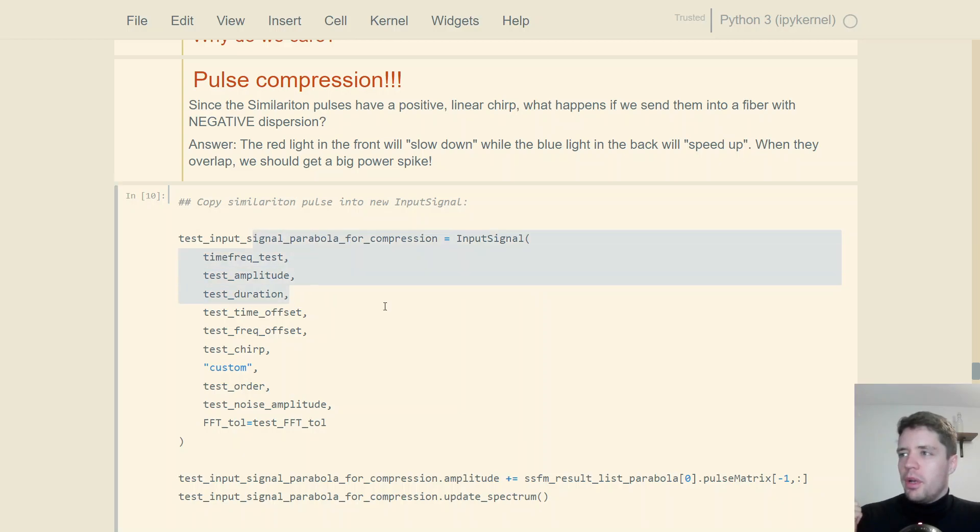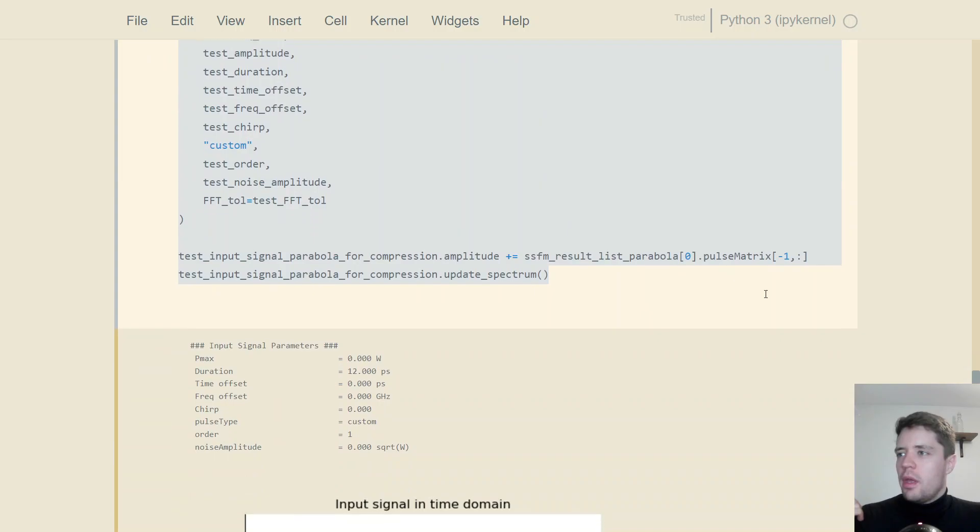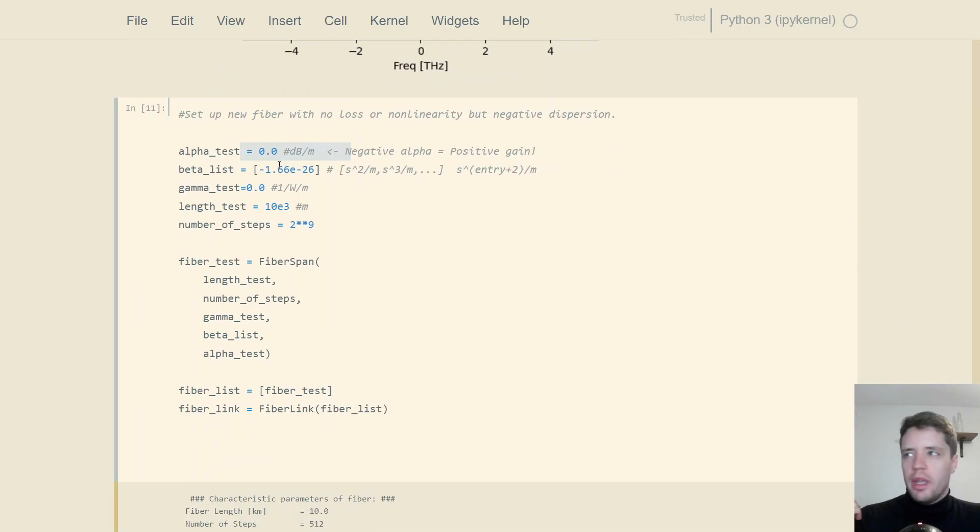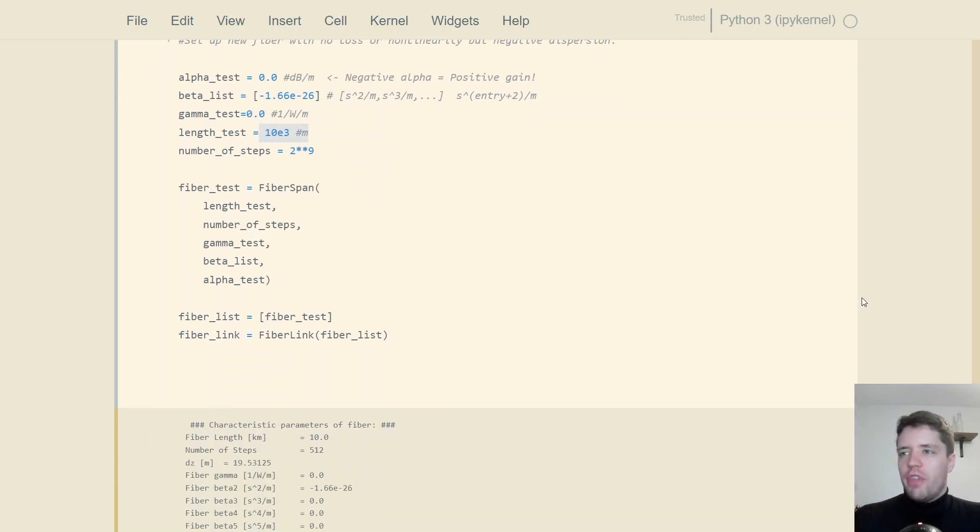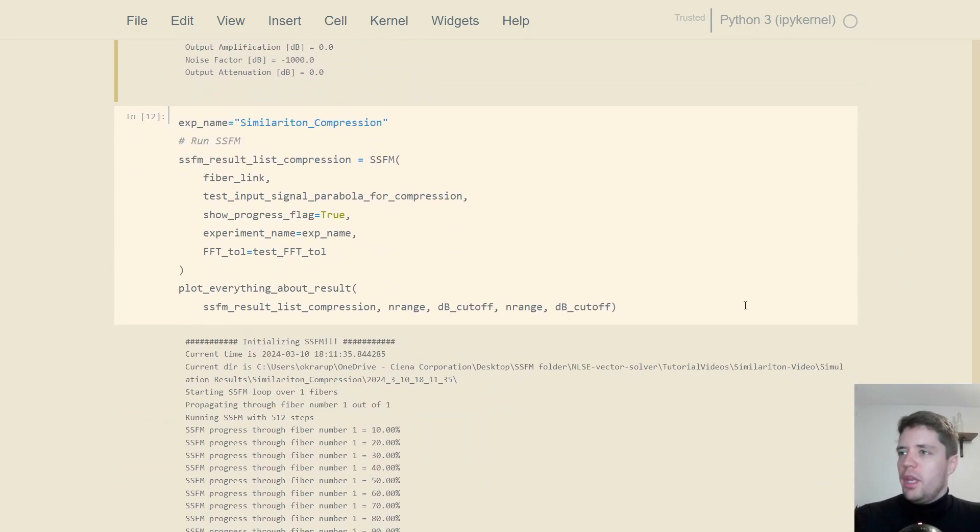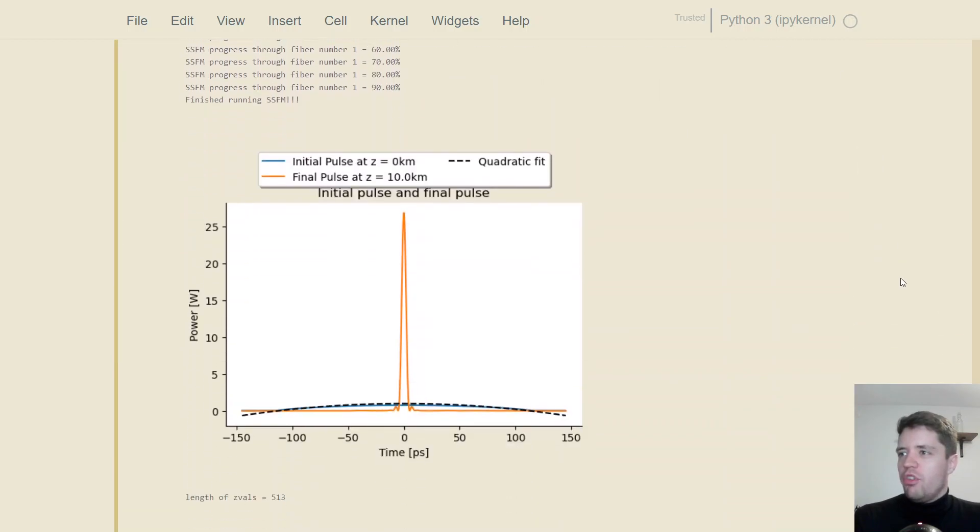So to see that in action, I've taken this parabolic similariton pulse right here and just copied it into a new input signal. And then I've set up a different fiber right down here, which has no attenuation or gain and has no nonlinearity, but does have a negative value of the beta-2 parameter. And I've also slightly changed the length here for convenience, as you'll see in a moment. So if we launch that similariton pulse with the linear chirp into the medium as I've done here, we can take a look at the output result. And indeed, we see that we get a very, very large spike in the power right here. And you can see we start off with this very broad initial pulse and we get a big power spike coming out.